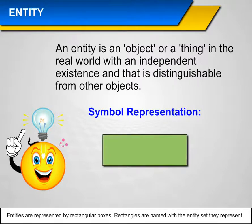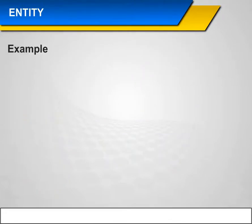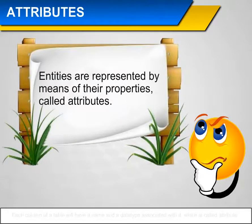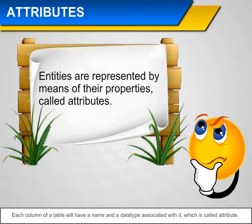Symbol representation of an entity. Example: In this example, 'Student' will become a table in the database. The student table may contain Name, Roll number, etc. Attributes: Entities are represented by means of their properties, called attributes. Each column of a table will have a name and a data type associated with it, which is called an attribute.